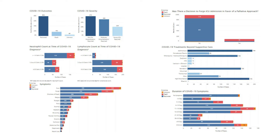Symptom-wise, transplant patients don't differ from normal people — fever, cough, shortness of breath, and fatigue are most commonly reported. Treatments received mirrored those in the community: azithromycin, chloroquines, remdesivir, and high-dose steroids were most frequently used. The median duration of symptoms was 11 to 15 days.